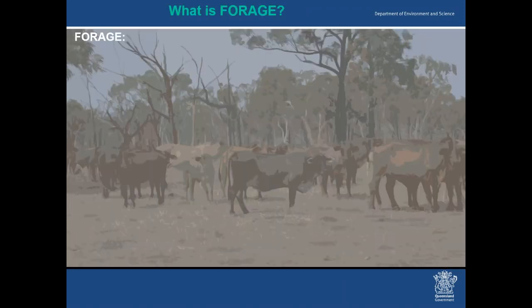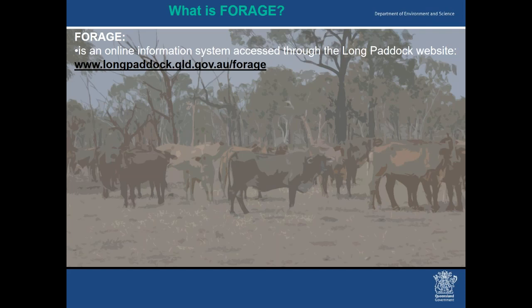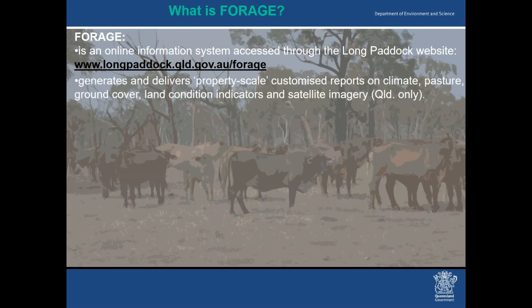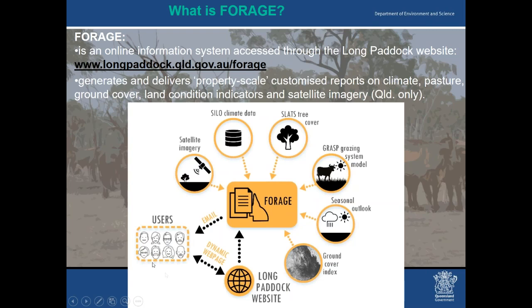FORAGE is an online information system accessed through the Long Paddock website. It generates and delivers property-scale customised reports on climate, pasture, ground cover, land condition indicators, and satellite imagery. At the moment it's Queensland only. The user contacts the Long Paddock website, gets into the FORAGE system through the forage page, selects a report, and FORAGE retrieves the required information — whether satellite imagery, climate data, pre-cover data — runs grazing systems models into seasonal outlooks or ground cover information, assembles it in a report template, and emails it to you as a PDF.